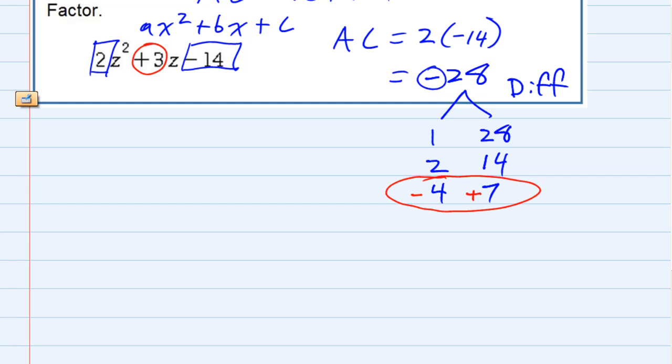Those two, when multiplied, give us our negative 28, but whenever we add them, they give us the positive 3 that we need for the middle term.